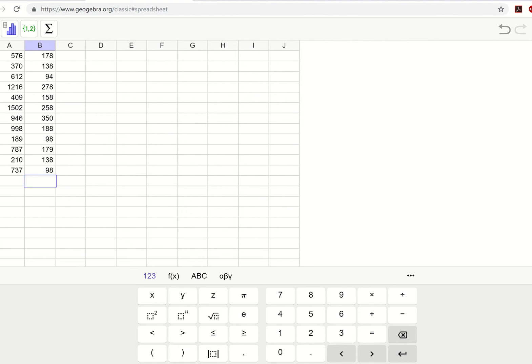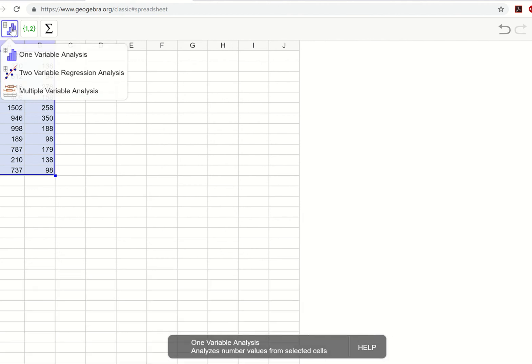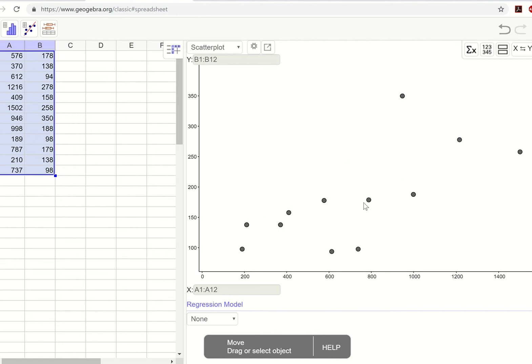So if we go to GeoGebra, I already input our data. Make sure you put whatever's your explanatory variable in column a, and then column b is the response variable. And then we'll want to highlight our data. Then we go to that histogram picture, but we want to choose the scatter plot for our two variable regression analysis. That'll give us a scatter plot.